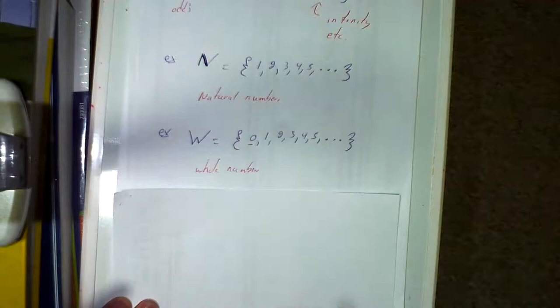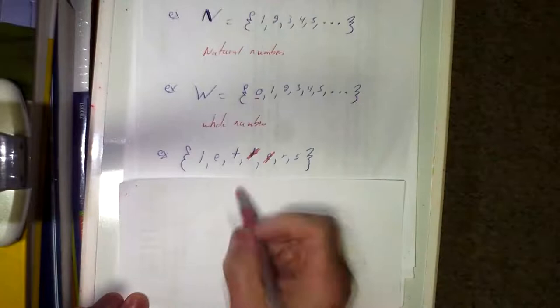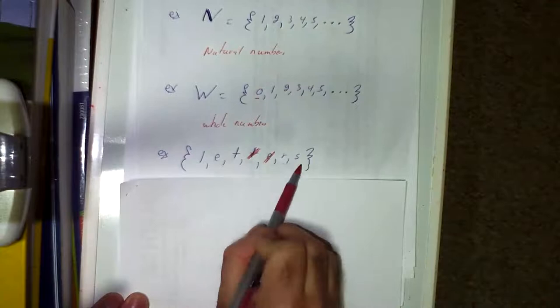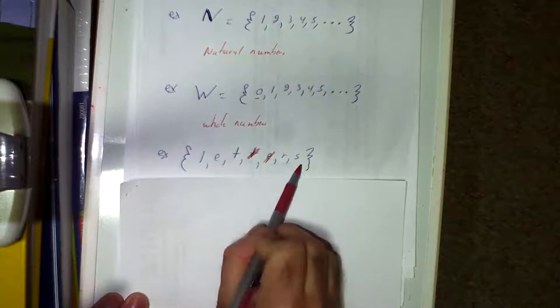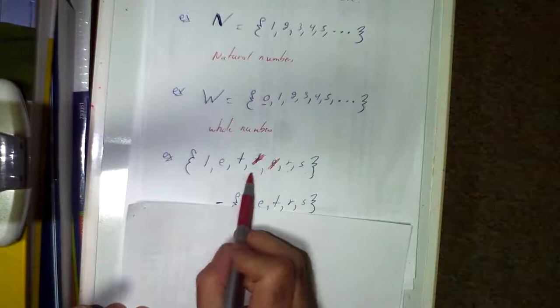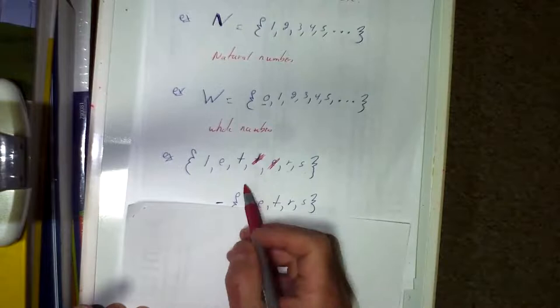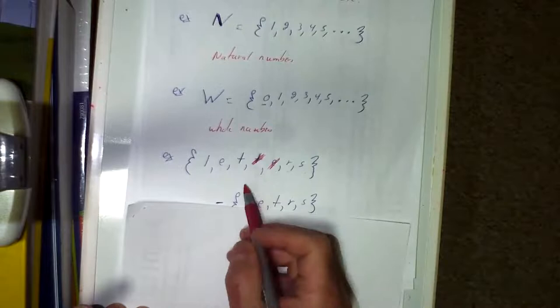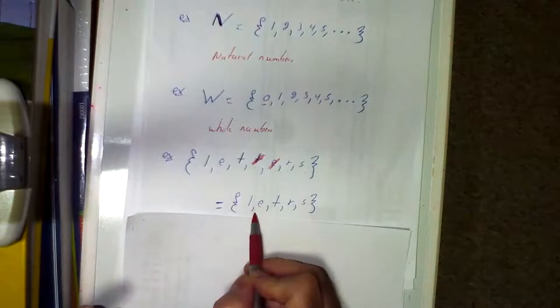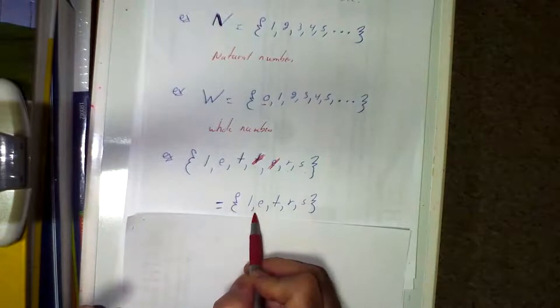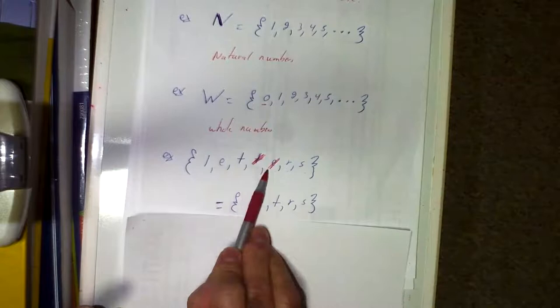When we use letters — say L, E, T, T, E, R, S — you don't want letters appearing multiple times in a set. Whenever you have letters appearing more than once, scratch out the duplicates and count them as one. So {L, E, T, T, E, R, S} becomes {L, E, T, R, S} — elements that repeat only get counted once.